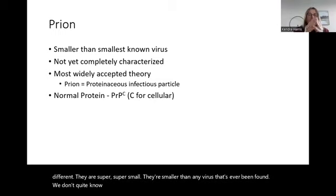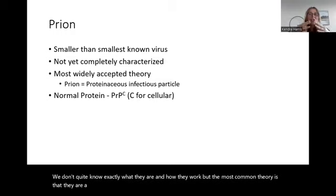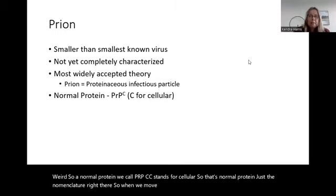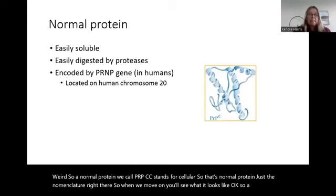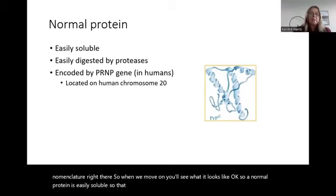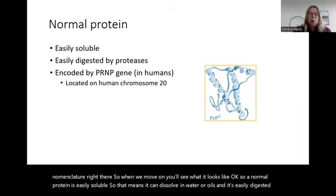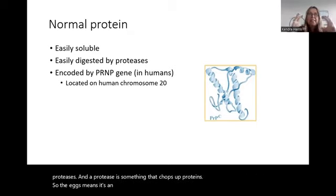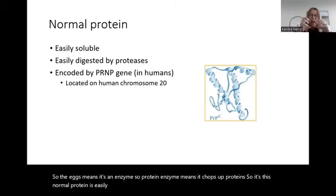We don't quite know exactly what they are and how they work, but the most common theory is that they are a misfolded infectious protein. A normal protein we call PrPC — C stands for cellular, so that's the normal protein. A normal protein is easily soluble, meaning it can dissolve in water or oils, and it's easily digested by proteases — enzymes that chop up proteins.